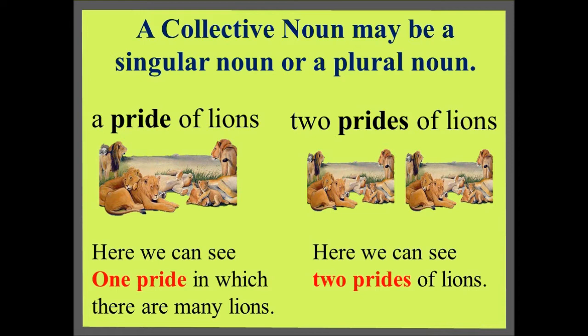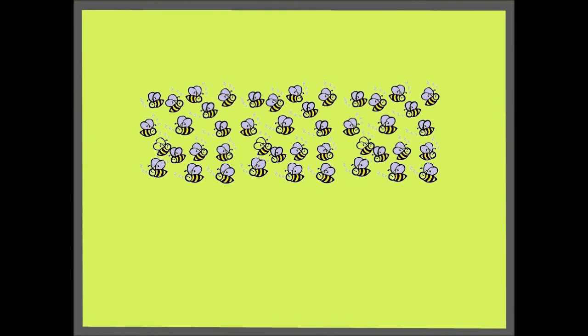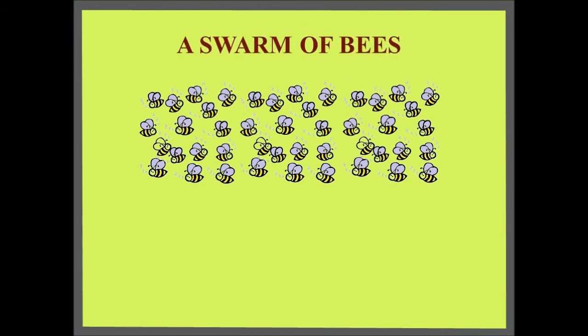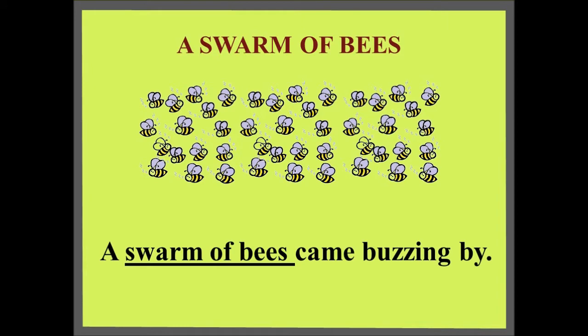Alright children, let us see some more examples of collective nouns. A swarm of bees — a group of bees is called a swarm. Now let us see a sentence: A swarm of bees came buzzing by.